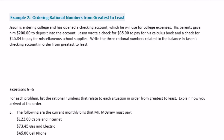Example 2. Jason is entering college and has opened a checking account which he will use for college expenses. His parents gave him $200 to deposit into the account. Jason wrote a check for $85 to pay for his calculus book and a check for $25.34 to pay for miscellaneous school supplies. So his parents gave him $200 — that's positive $200. Then he wrote a check for $85, so negative $85. And then another check for $25.34, so negative $25.34.